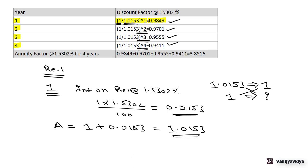The annuity factor is just the sum of all these discount factors. Adding them all together we get 3.85, which is correct. So the IRR is 1.5302%. This is how we calculate the internal rate of return when we have uniform cash flows and a present value annuity factor table.